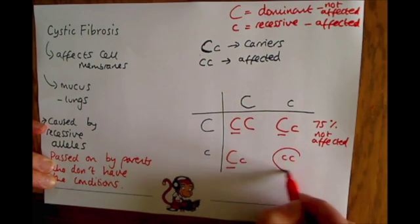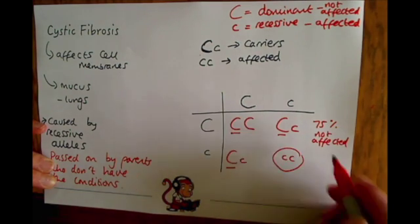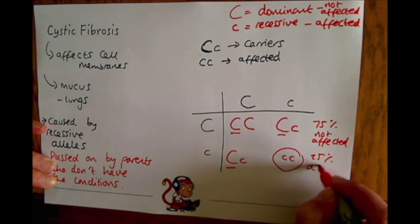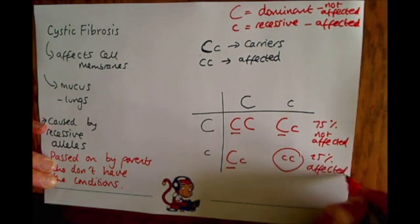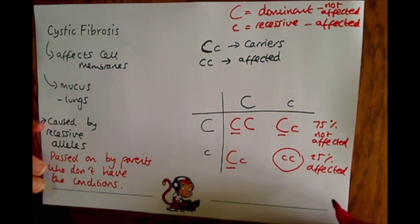But here, there is a 25% or 1 in 4 chance that the offspring will be affected by cystic fibrosis.